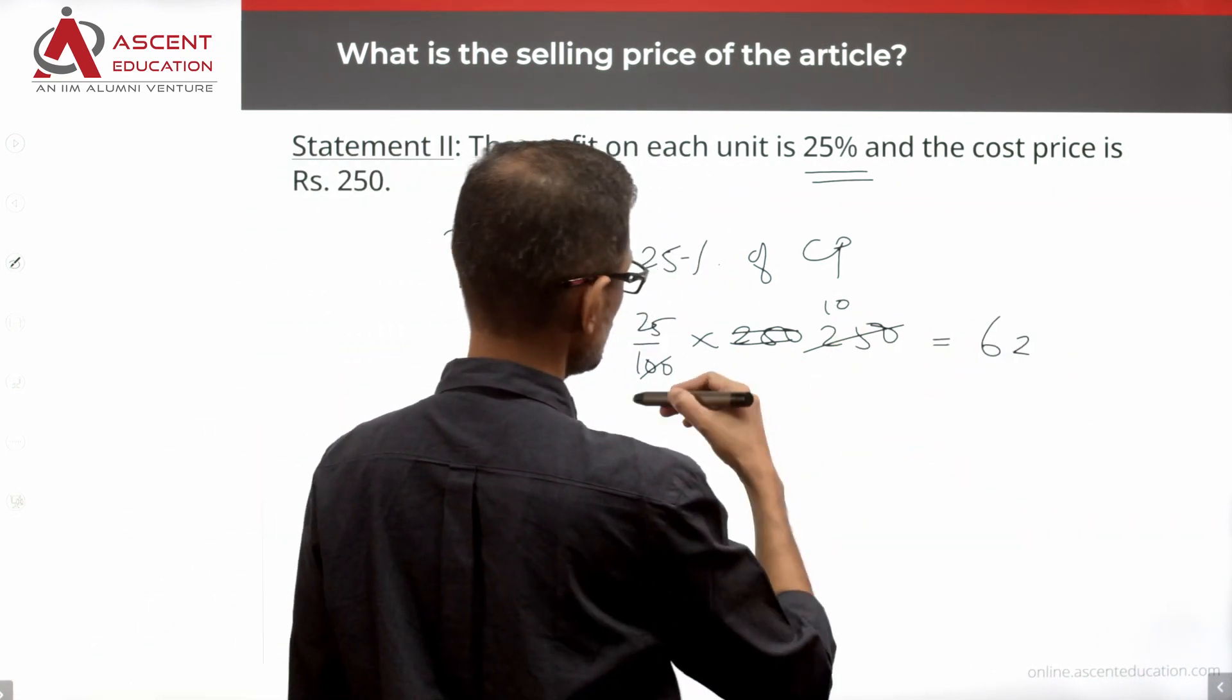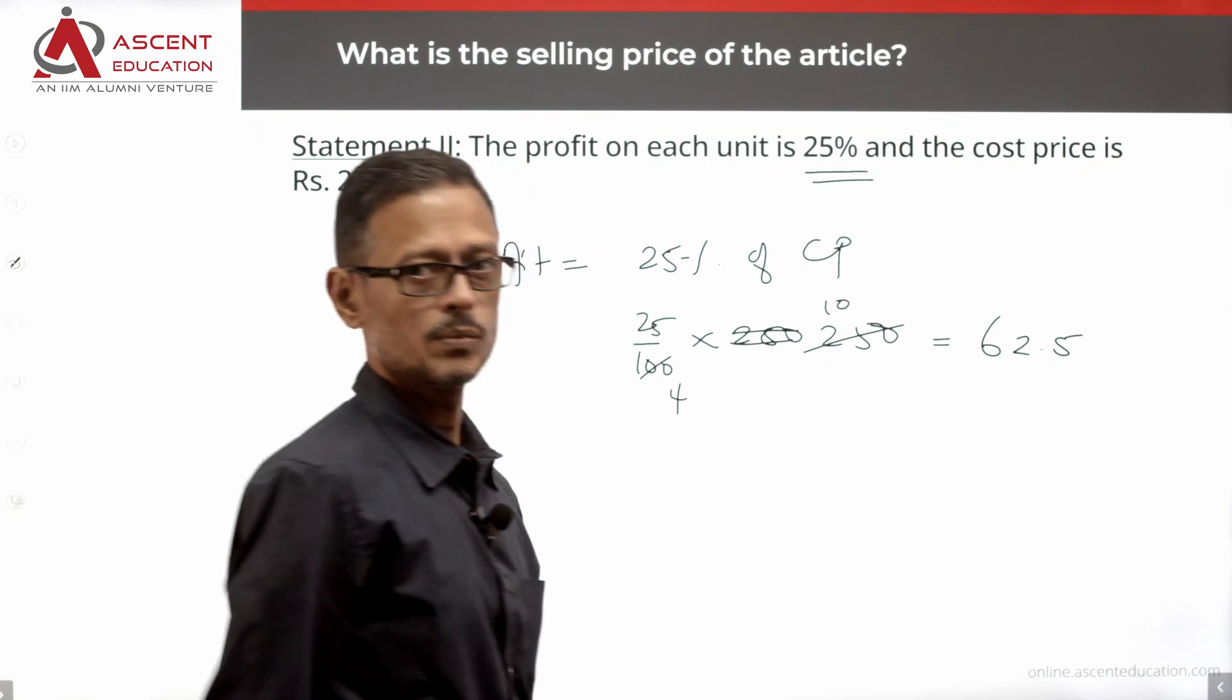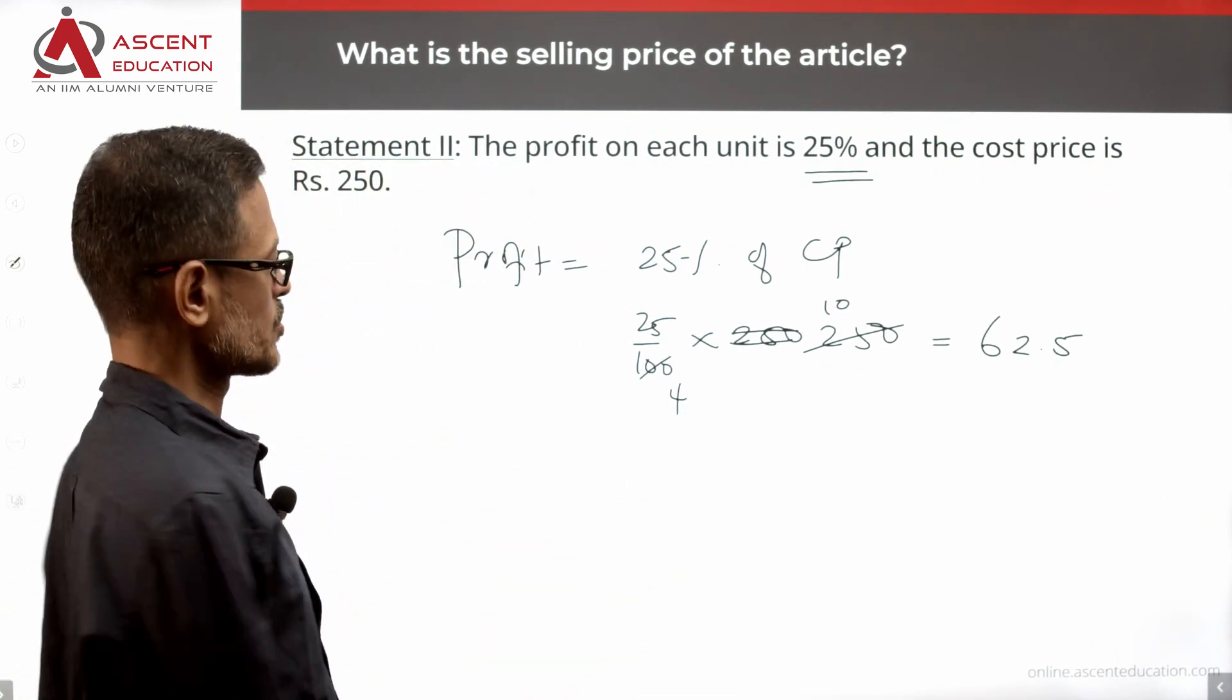So profit is equal to 250 by 4, which is equal to 62.5. Profit is equal to 62.5.